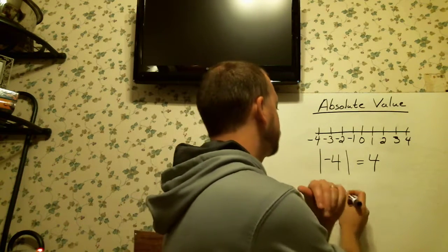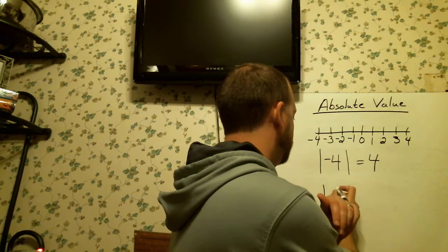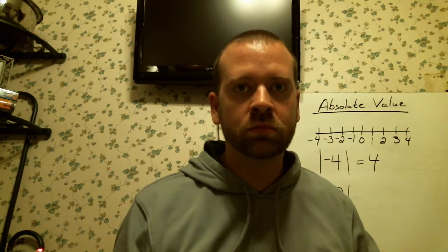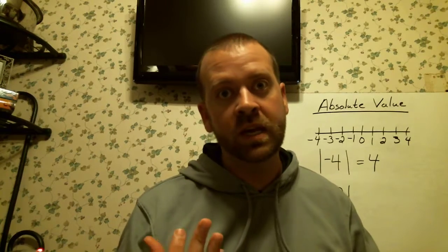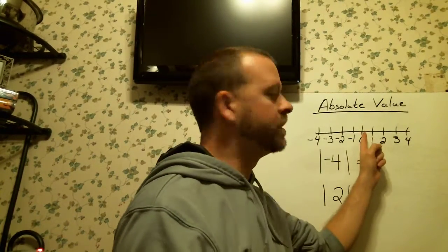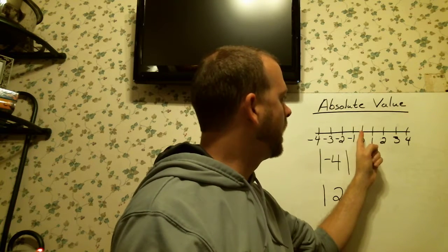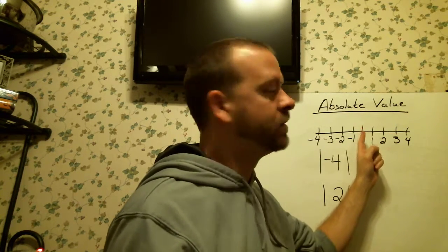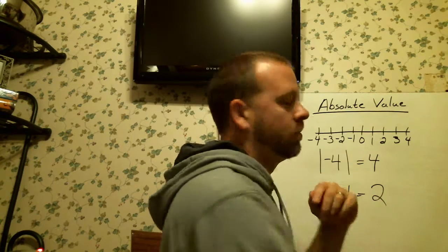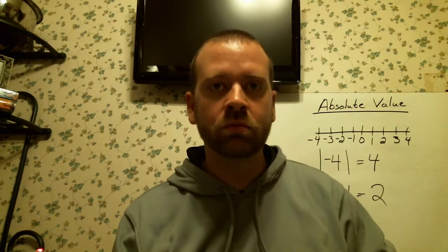Same with this. Absolute value of positive 2. Well, it's going to be how far it is from 0. So, let's look at our number line. Start at 0. And how many jumps do we have to take to get to 2? 1, 2. Absolute value of positive 2 is 2.